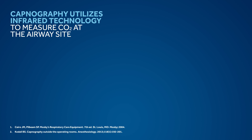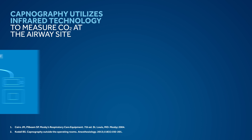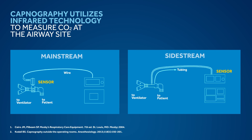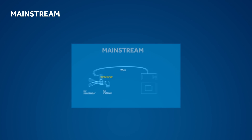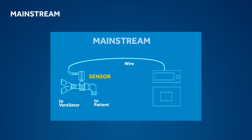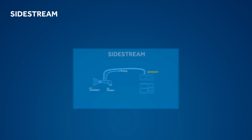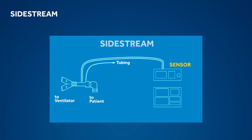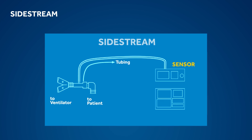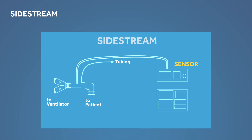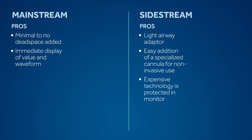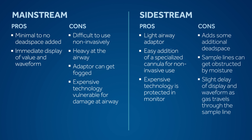There are two types of sensors that capnography uses to measure ETCO2: mainstream and sidestream. Both sensor types utilize infrared technology to measure CO2 at the airway site. The mainstream sensor is interposed between the tracheal tube and the breathing circuit. In sidestream sensor technology, the respiratory gases are diverted via an adapter and a sampling line to the monitor housing the infrared sensor. Traditional CO2 sensors and sampling lines, both mainstream and sidestream, have certain limitations that can contribute to inaccurate readings and restrict use within certain patient populations.